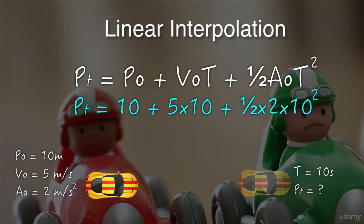After plugging the values into the equation, we now know that the car, again assuming that it was traveling in a straight line, will now be 160 meters along the track.